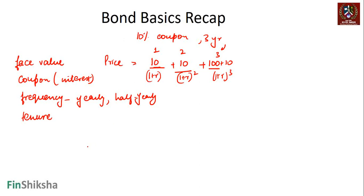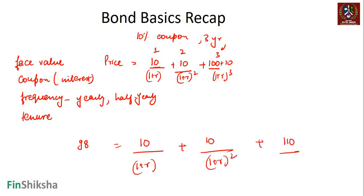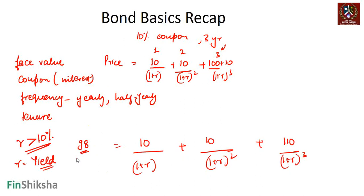Given a market price — say 98 rupees — this equation gives a value for r. Because 98 is less than the face value of 100, r would be greater than 10%, making this a discount bond. This value of r is the yield on the bond — if you buy the bond at 98, what return are you making? What we calculate is: take cash flows of minus 98, 10, 10, and 110, and compute the IRR — that is the annual yield.